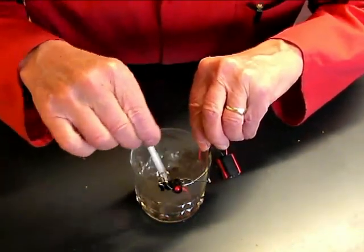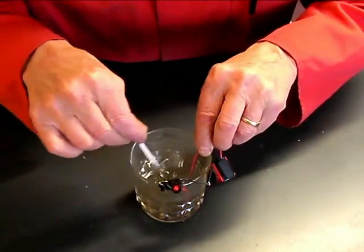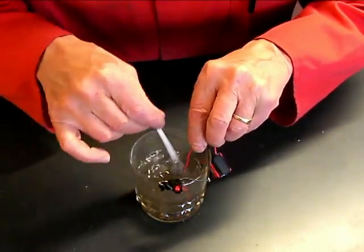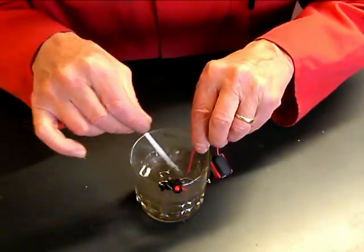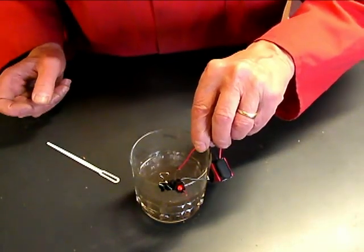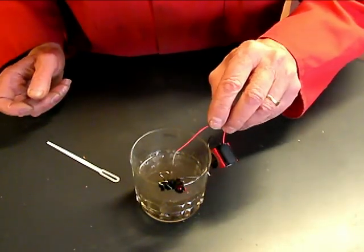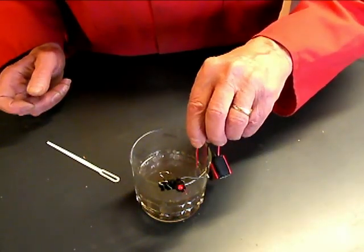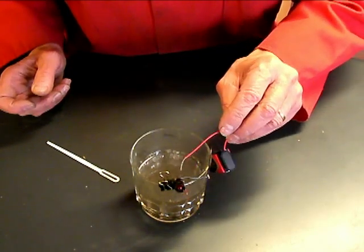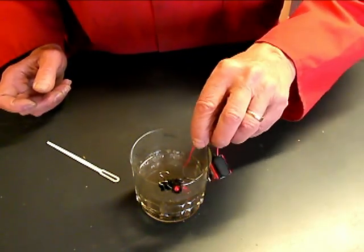As the dirt dissolves into the water it becomes conductive and the lamp lights. For this reason I would not recommend spraying fine water mist onto live electrical equipment as the contaminated runoff may be conductive.